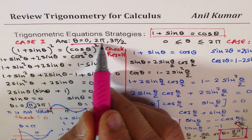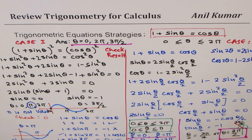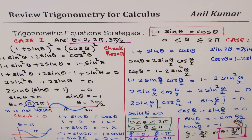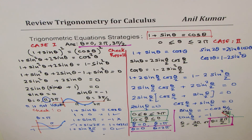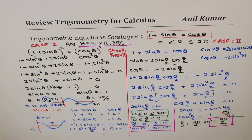So we get the same three solutions using two different methods. These are concepts about trigonometry which will be applied in calculus — the whole idea is to refresh and begin with calculus. We have learned different techniques of using trigonometric ratios, recalled the formulas, and now you are absolutely ready to take on calculus with trigonometry. All the best!